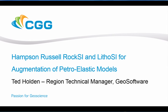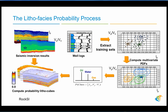I'd like to continue and talk about ROC-SI for augmentation of petroelastic models. In the lithophases probability process, described here in its entirety, we have elastic seismic inversion results, well logs, and using the information in the well logs, we can construct a cross-plot of P-impedance and Vp/Vs ratio from the well log information, and then categorize it by lithophases type. In this example we see three different groupings or categories of lithophases types.